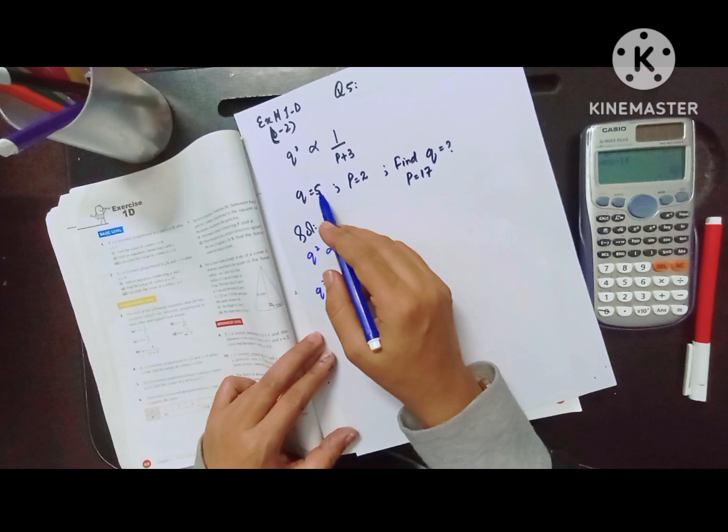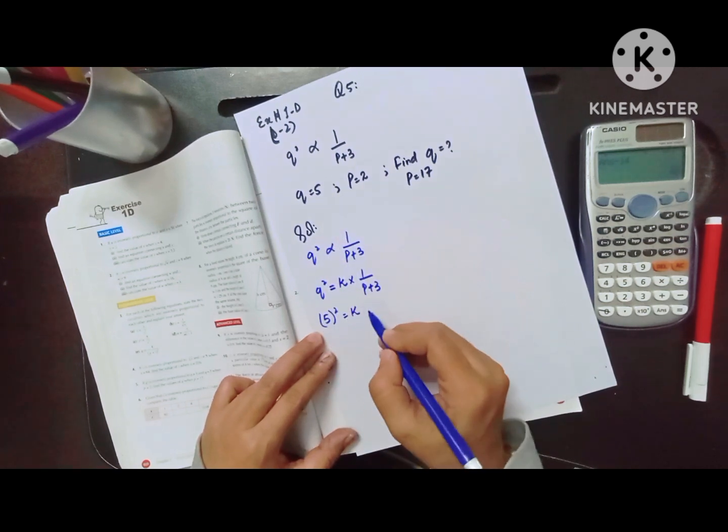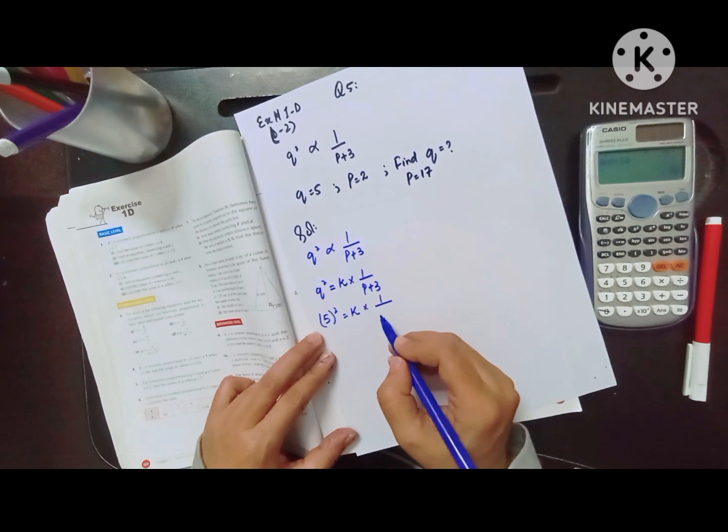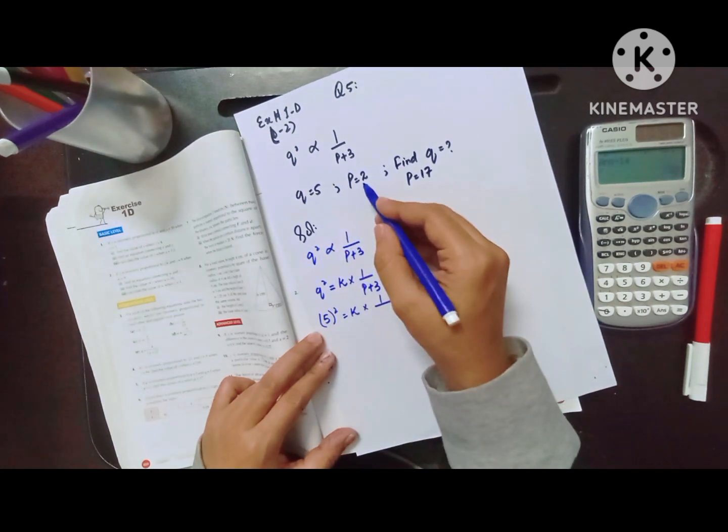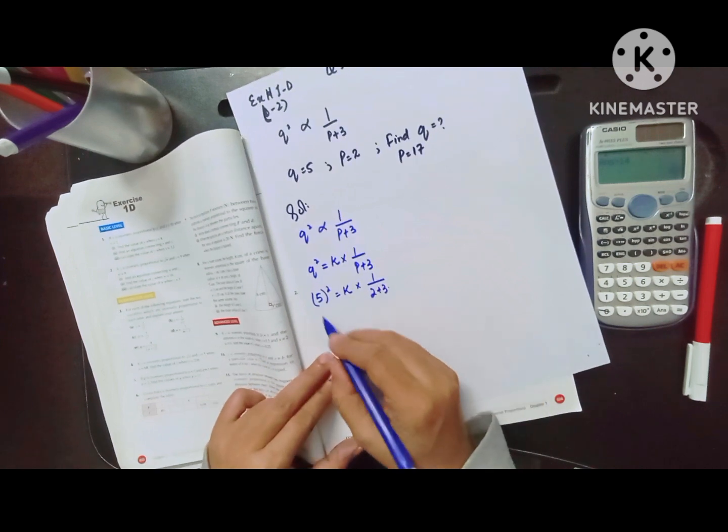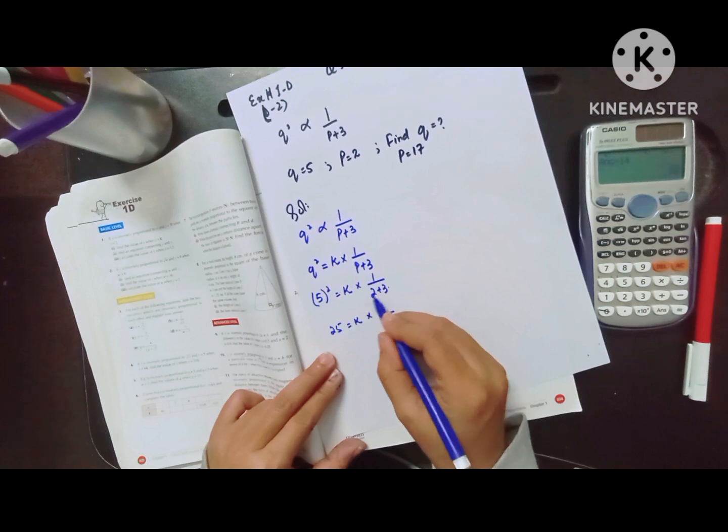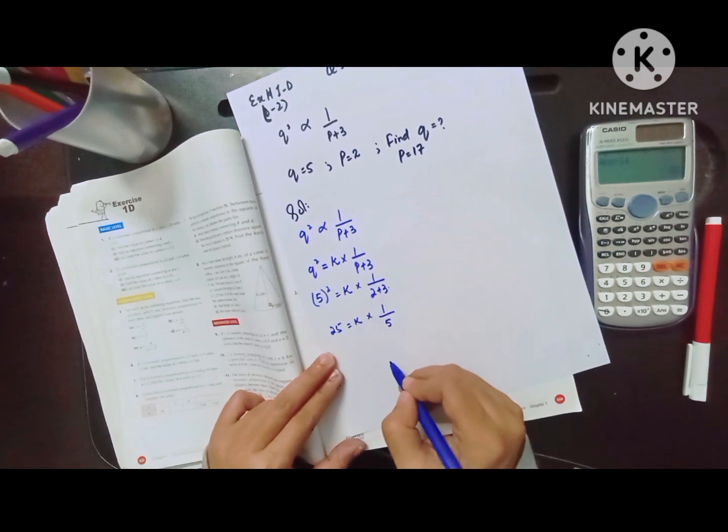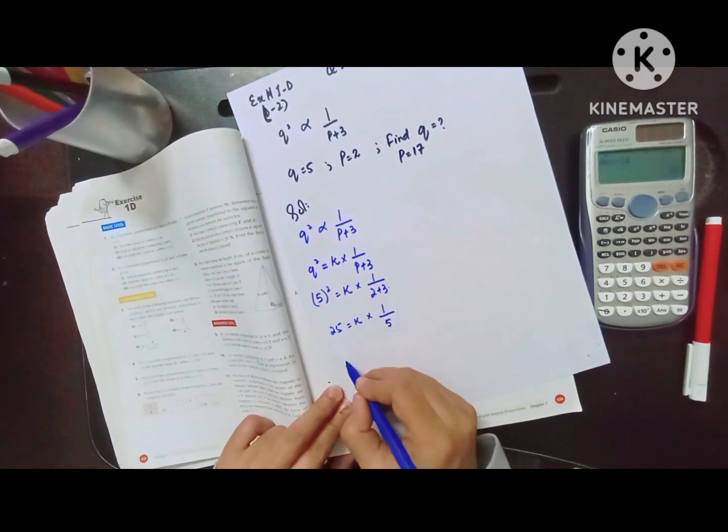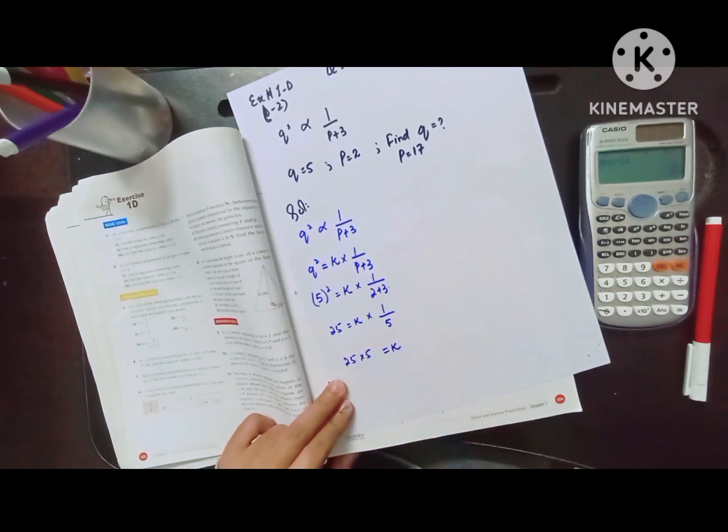The initial value of q is 5, k is unknown, and p is 2. Then 5² which is 25 equals k multiplied by 1 over 2 plus 3, which is 5. Then this 5 will be shifted here, so 25 times 5 equals k.